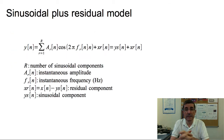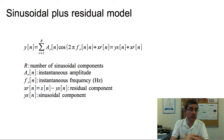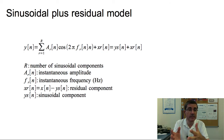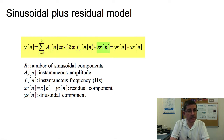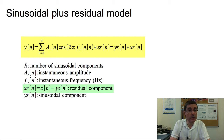The sinusoidal plus residual model is an extension of the sinusoidal model. We assume the sinusoidal model is not able to represent the whole sound and that there is a residual component that is perceptually relevant — a sound that needs to be kept. The signal y is modeled as a sum of time-varying sinusoids with amplitude and frequency, plus xr, our residual. The whole sound is ys, our sinusoidal component, plus xr, the residual signal. xr is simply computed by subtracting the sinusoids from the original signal.